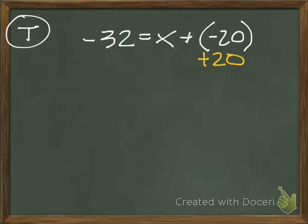So if I add 20 to one side, in order to keep the equation balanced, I have to do it to the other side. So now, looking at the right-hand side, negative 20 plus 20 cancels out, and that will equal 0. So the only thing I have left on that right side is x.